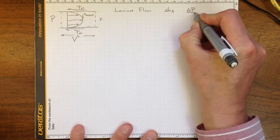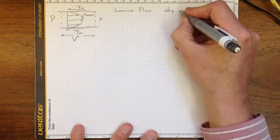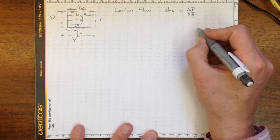so delta P is related to our head loss due to friction directly. And in fact, it's just a matter of the constant rho G to change from pressure units into head units.